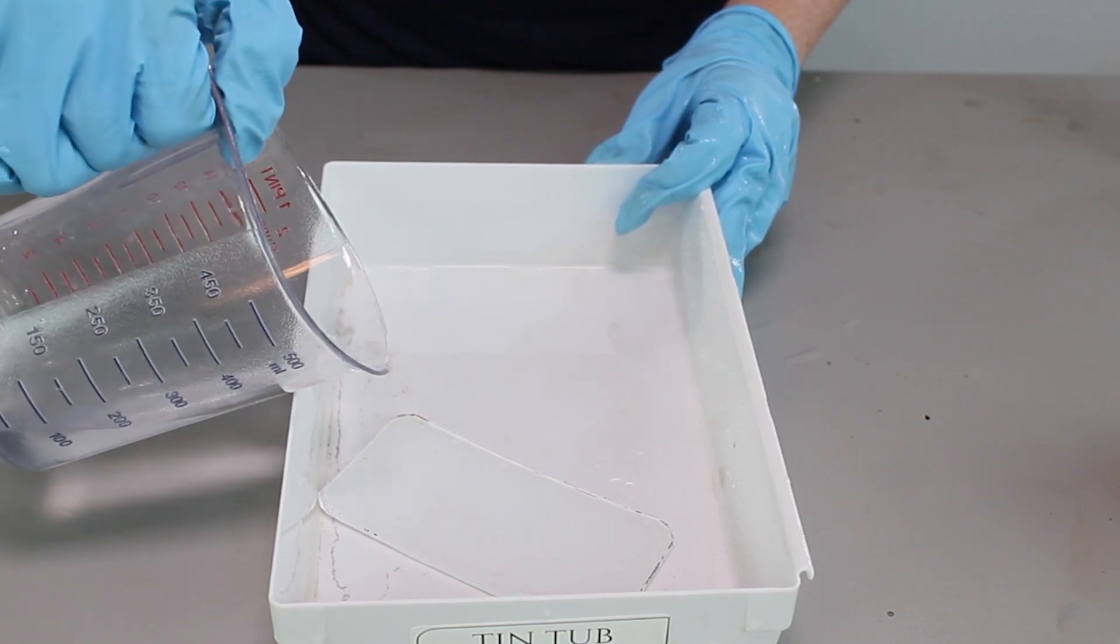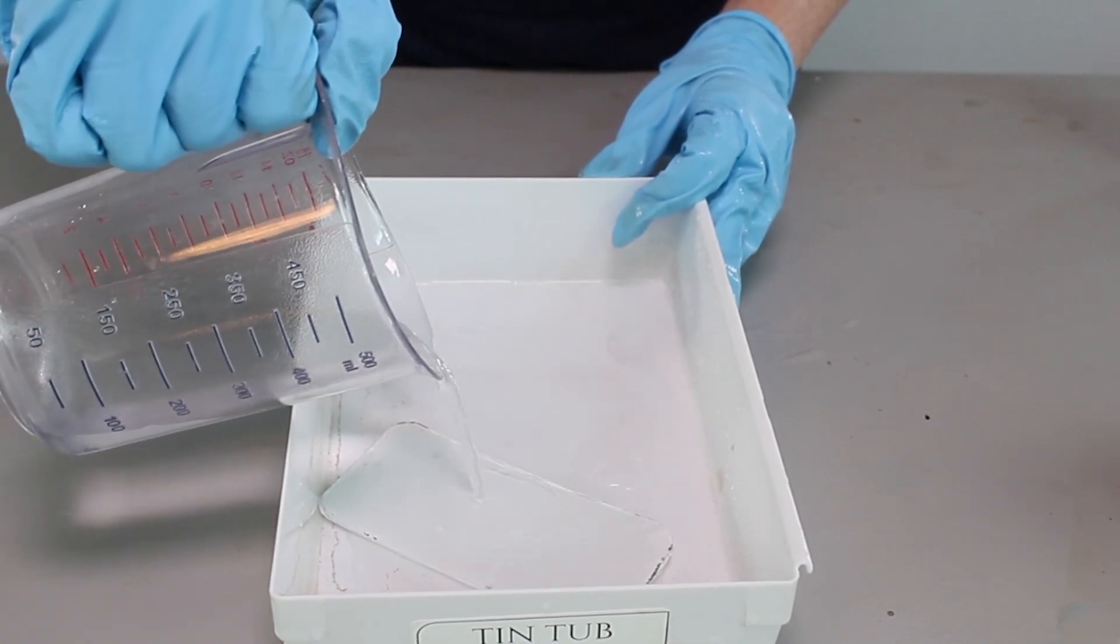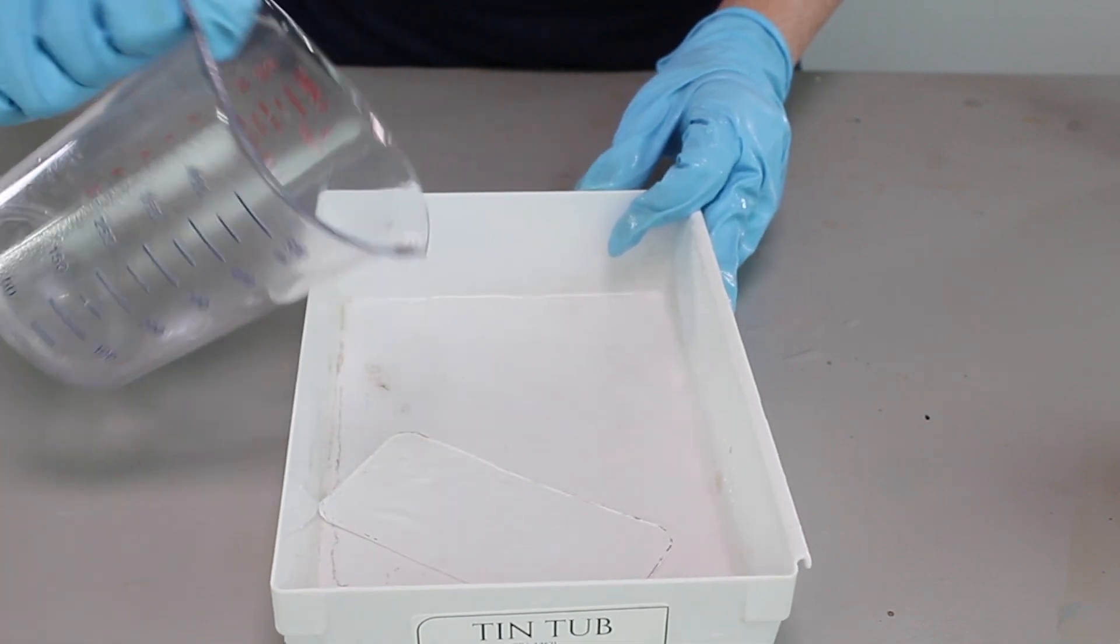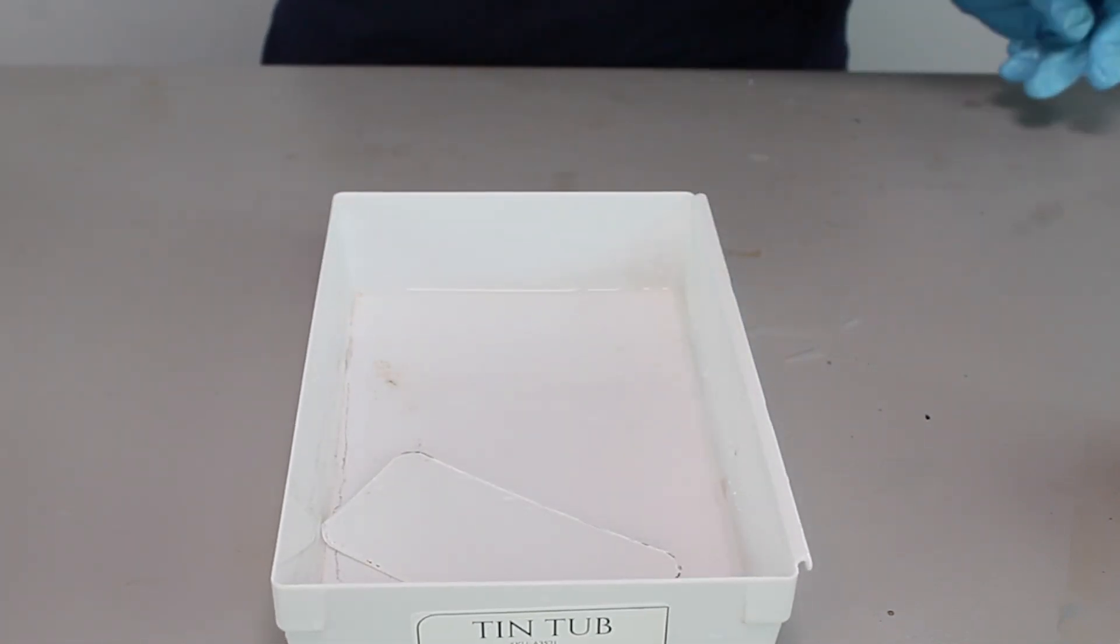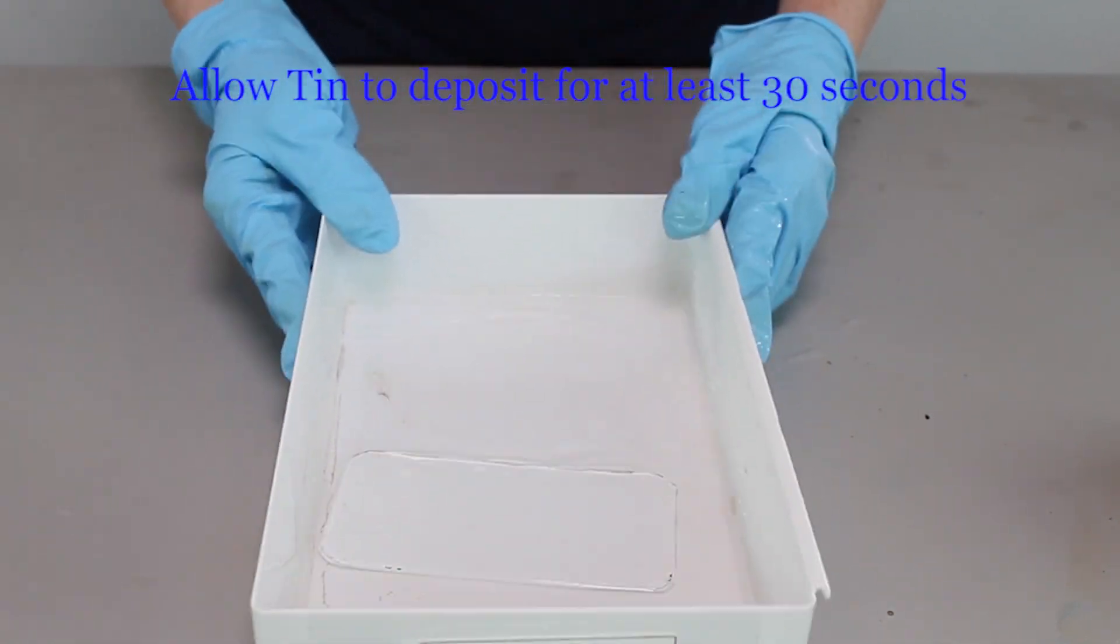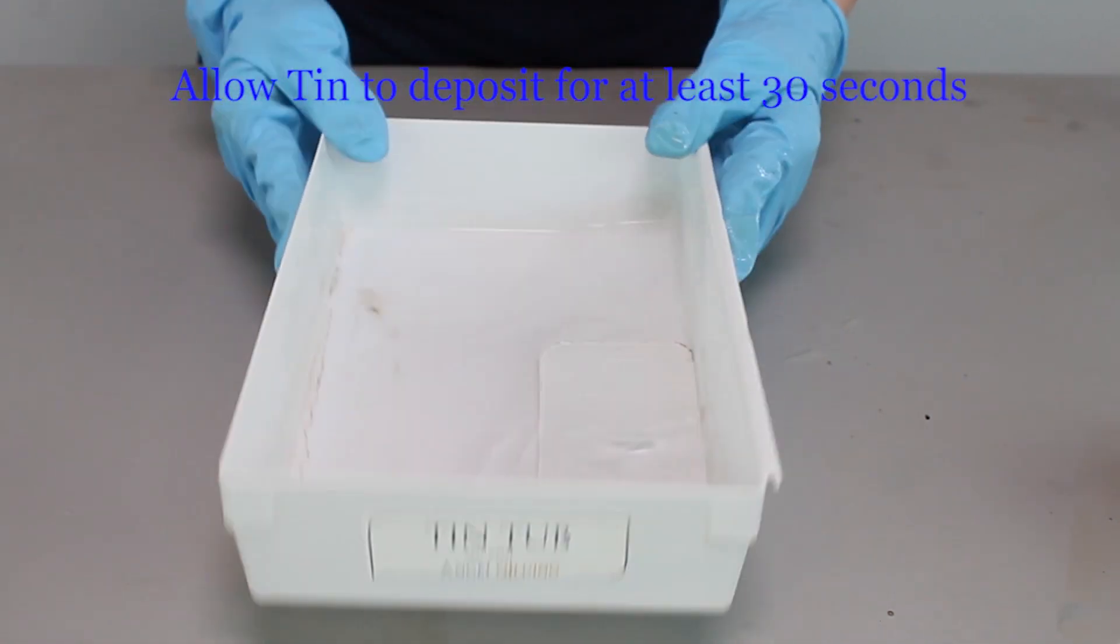Just pouring that tin over the surface. And you can see what's happening here is it's just creating a shallow bath of the chemicals that will gently rock over the surface. So I just gently rock the piece back and forth for at least 30 seconds.